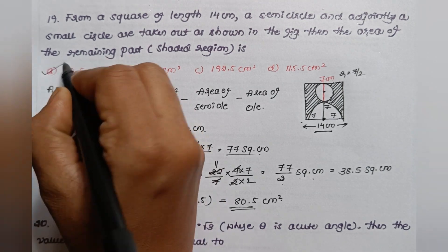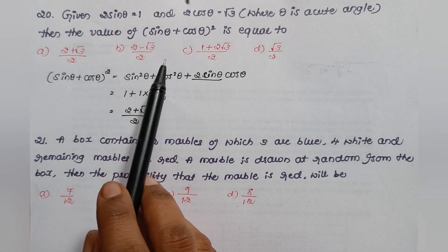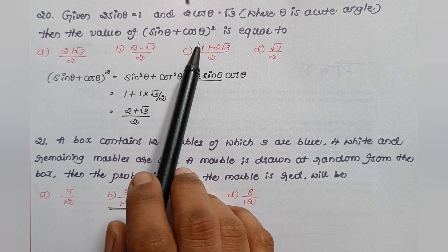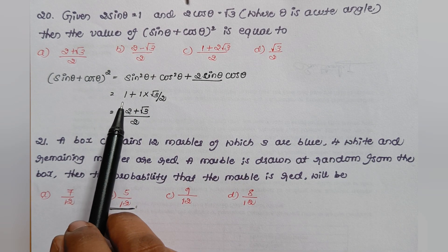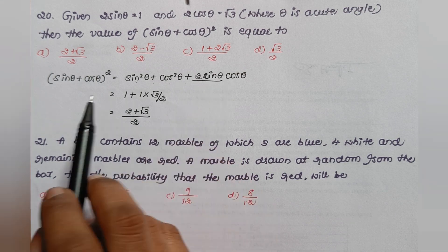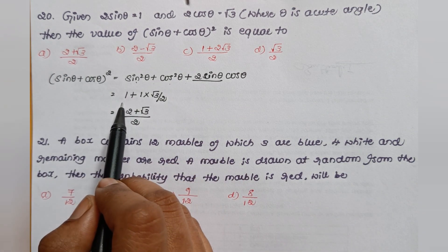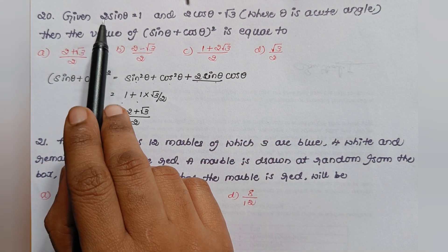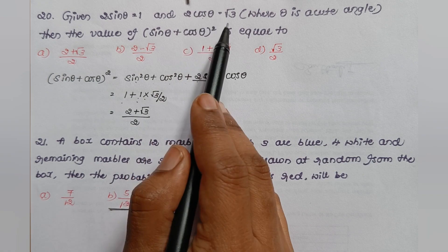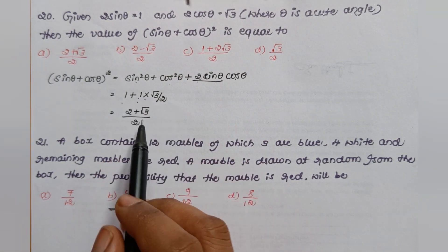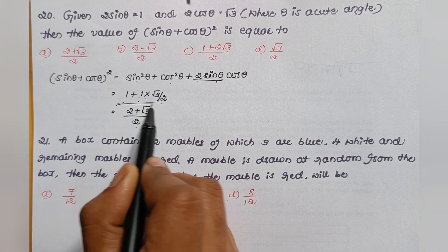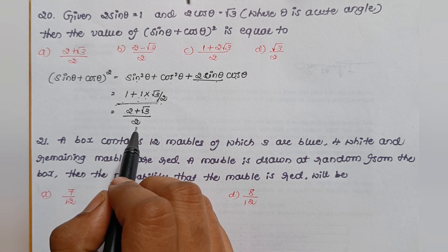Given 2 sin θ = 1 and 2 cos θ = √3, where θ is an acute angle, find (sin θ + cos θ)². Expanding using (a + b)² = a² + b² + 2ab, we get 1 + (3/4) + 2 × sin θ × cos θ. Since 2 sin θ = 1, sin θ = 1/2, and cos θ = √3/2, giving the answer as 2 + √3/2.